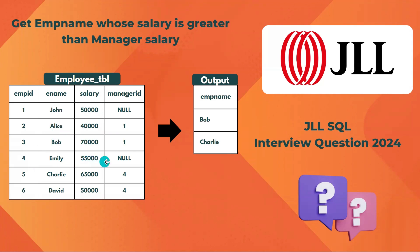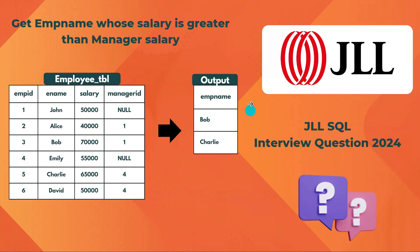Similarly, Emily doesn't have any manager ID, so she has no manager. The next two records, Charlie and David, have manager ID 4, meaning their manager is Emily. Emily's salary is 55,000, while Charlie's is 65,000 and David's is 50,000. Charlie's salary of 65,000 is greater than Emily's salary. So across the whole table, Bob and Charlie are the two employees whose salary is greater than their manager's salary — that's what we need in the output.